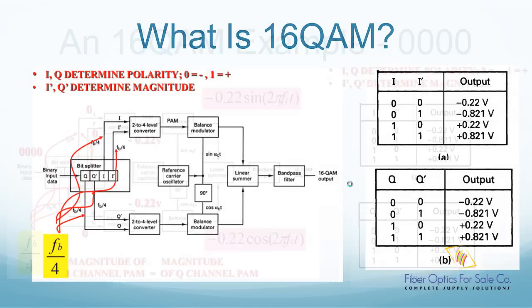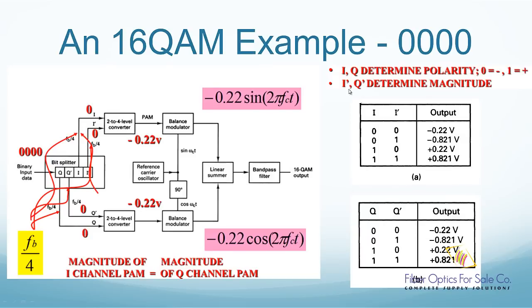This illustration shows an example of how the quad bit 0000 is modulated onto the carrier waves. Here, I and I apostrophe is 00, so the output is negative 0.22 volts at the 2 to 4 level converter. When timed with the sine wave carrier, we get negative 0.22 sine 2 pi fc t. Here, fc is the carrier wave's frequency.